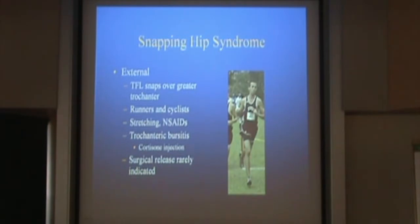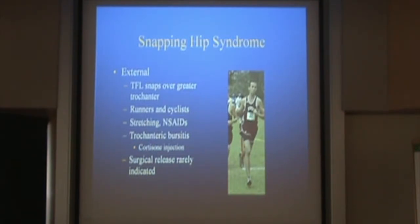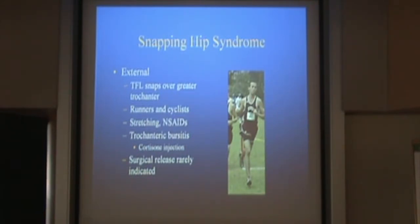External snapping hip syndrome is the tensor fascia lata snapping over the greater trochanter. Girls typically come in saying they can dislocate their hip — they're not; it's the TFL snapping. Common in runners and cyclists, almost always gets better with stretching and non-steroidals, and can go along with trochanteric bursitis. A cortisone shot over the greater trochanter is easy and safe. There are reports of surgical releases — historically the Z-plasty of the tensor fascia, and now arthroscopically cutting out a diamond over the trochanter — but I've never seen a case requiring surgery.